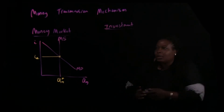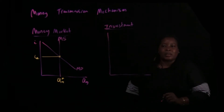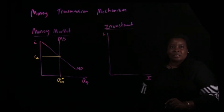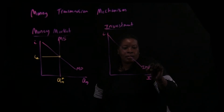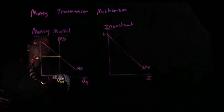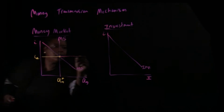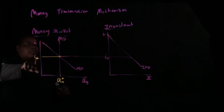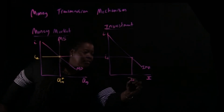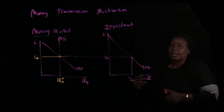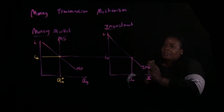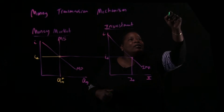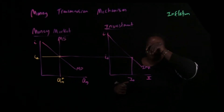Let's set up the investment market. We put investment here, and the Fed is manipulating the interest rate to get a desired change in investment. The interest rate from the money market can be traced to the investment market, showing the amount of investment it generates. The Fed is trying to fix one of two problems: inflation, or a recession.